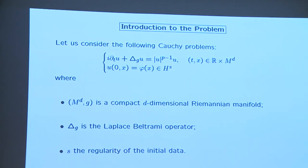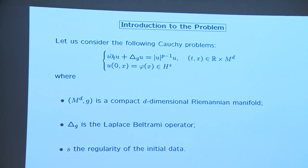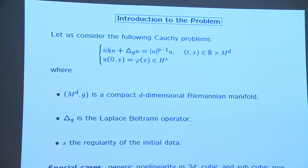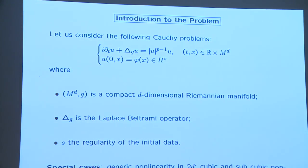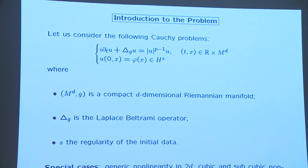The special cases we are interested in: in 2D, M^2 is a general compact manifold and p is any integer nonlinearity — no restriction to the cubic case. In 3D we can deal with the cubic case and say something in the sub-cubic case, without any assumption on the topology of the manifold.